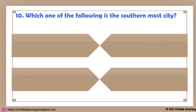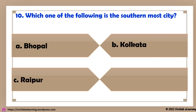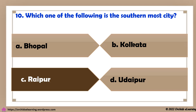Which one of the following is the southernmost city? The answer is C: Trippur.